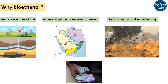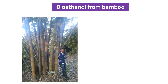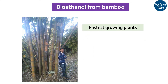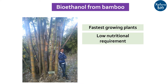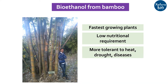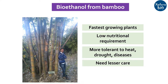This would also add to the farmer's income. For today's video, I will take an example of bioethanol production from bamboos. But why bamboos? Bamboos are one of the fastest growing plants that can grow in low water and nutritional soils. They show more tolerance to heat, drought, and diseases. Compared to other plants, they need lesser care. Further, you can have very high biomass yield per acre of land from bamboos.